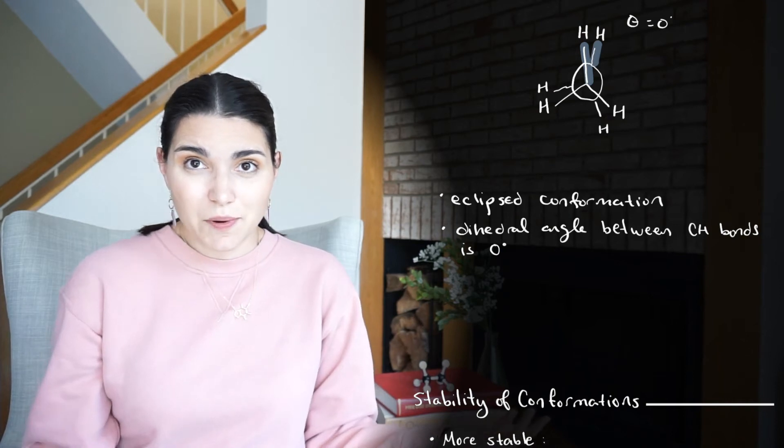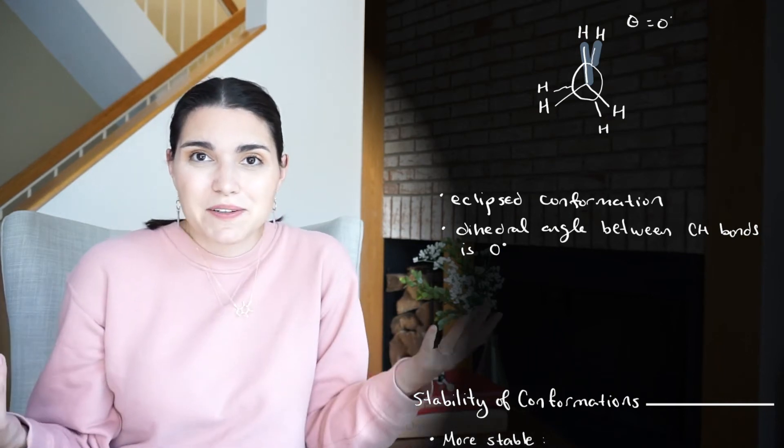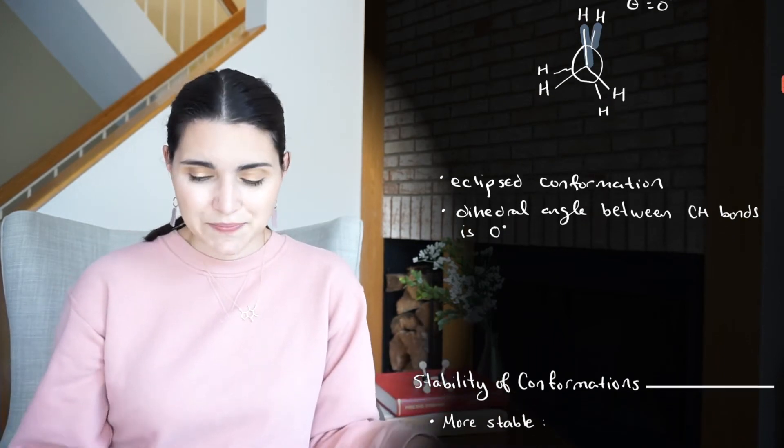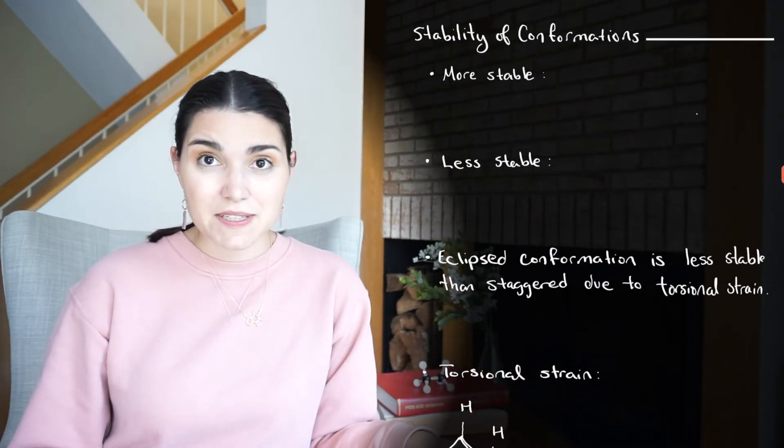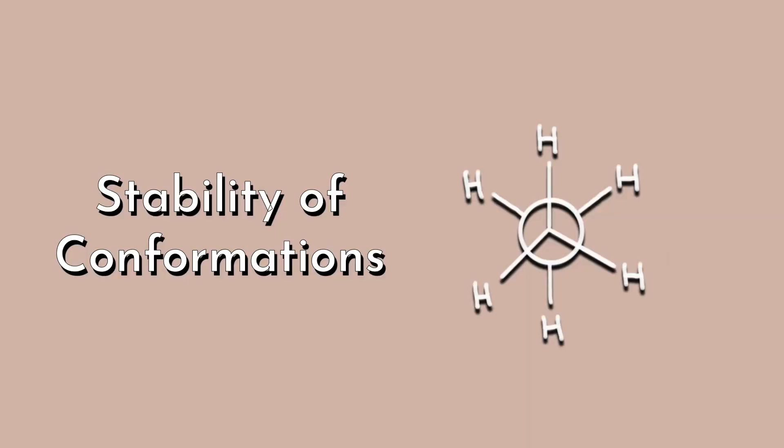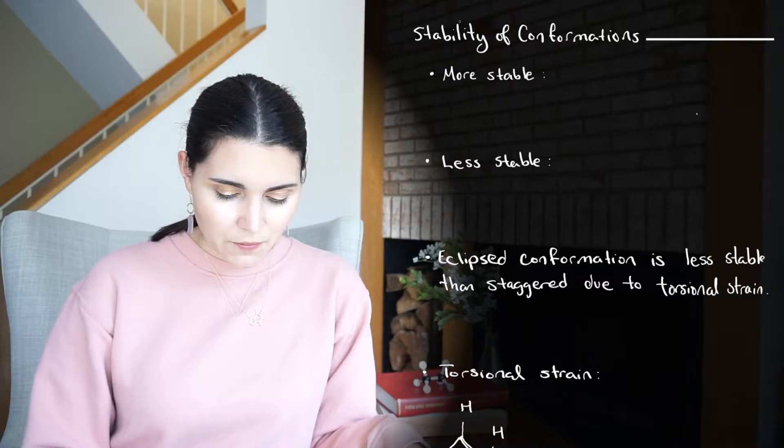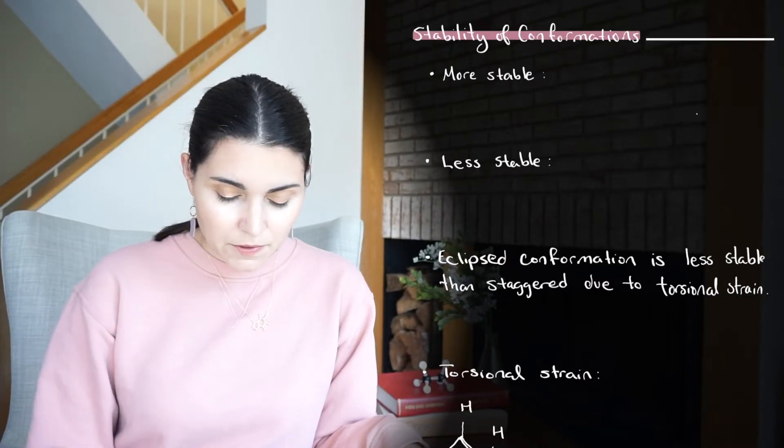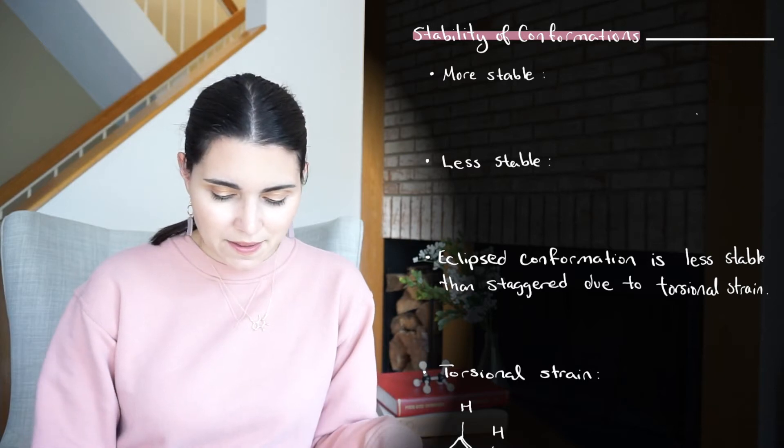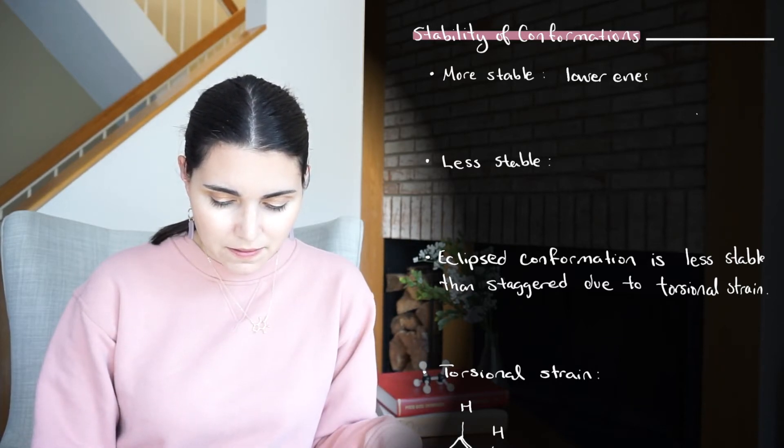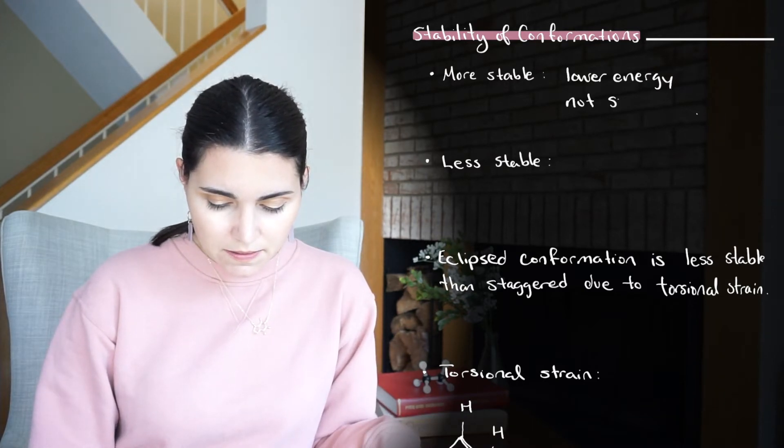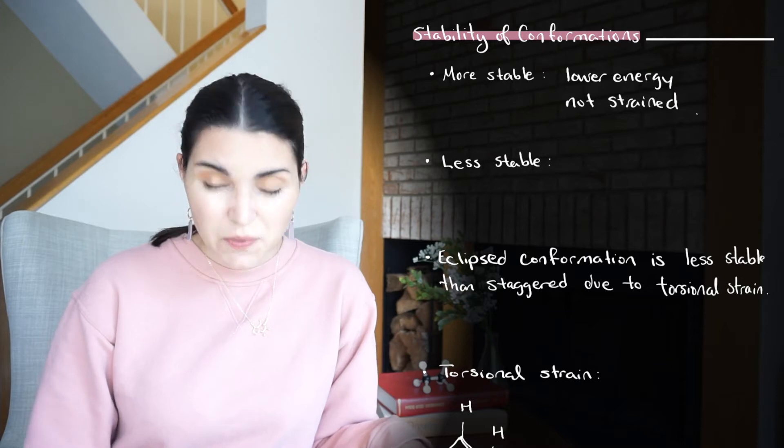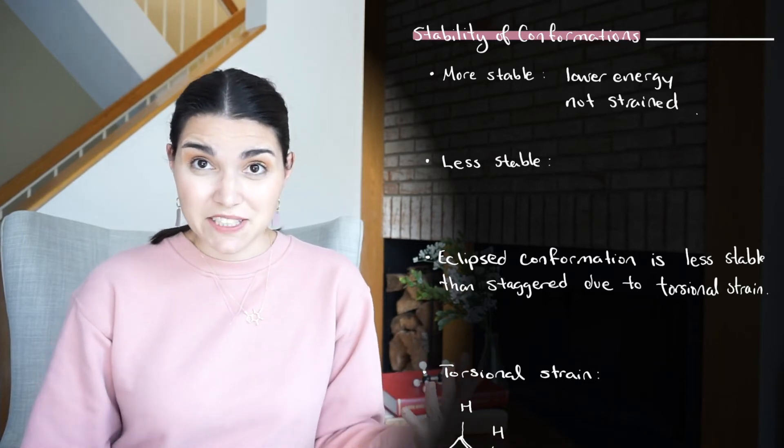So why do we care about these bond rotations anyway? What's the point of learning about the conformations of ethane? Well, what we really want to know about these conformations is their stability. And what do I mean when I say stability? When a molecule is more stable, that means it has lower energy. It's not strained in any way. We'd say it's happy and relatively chill.